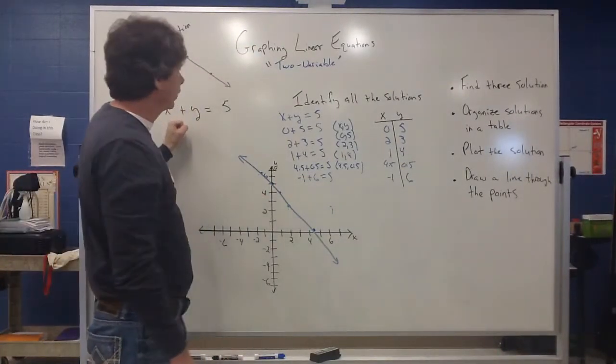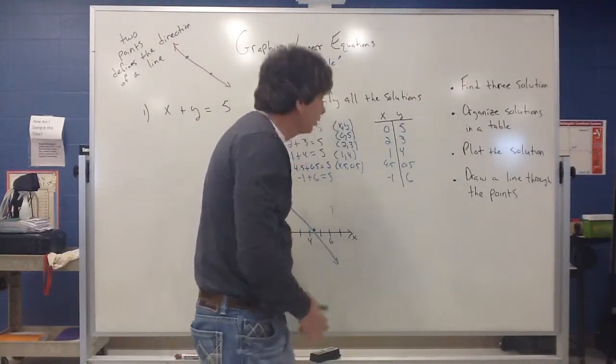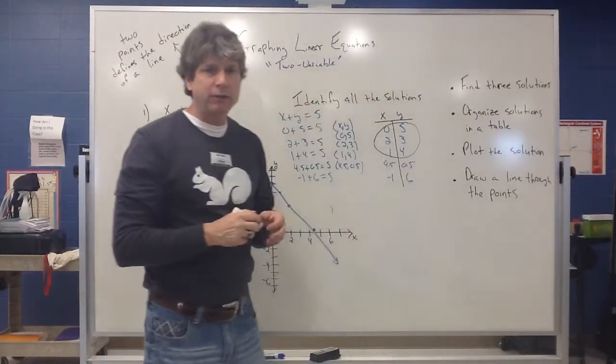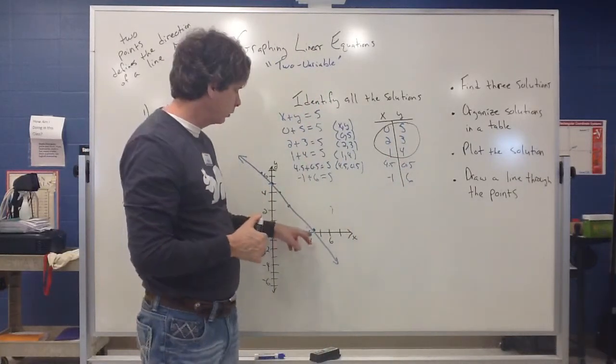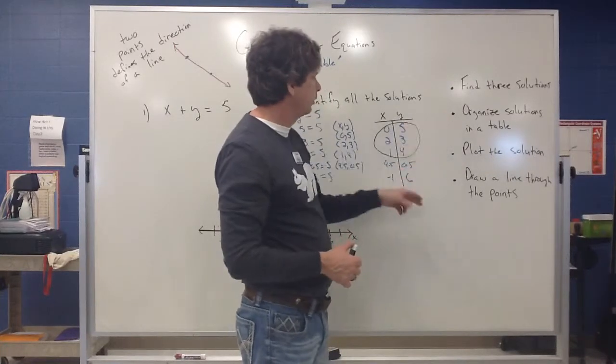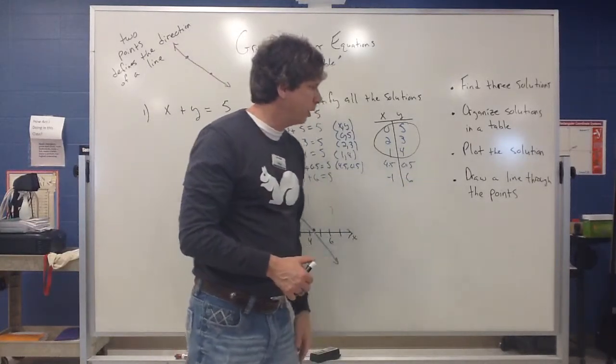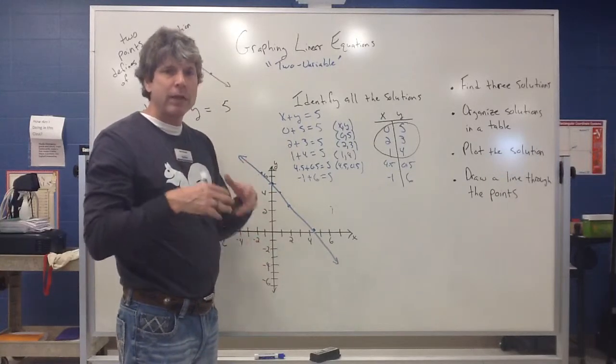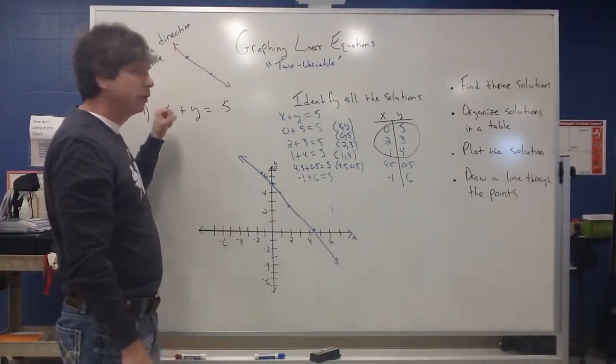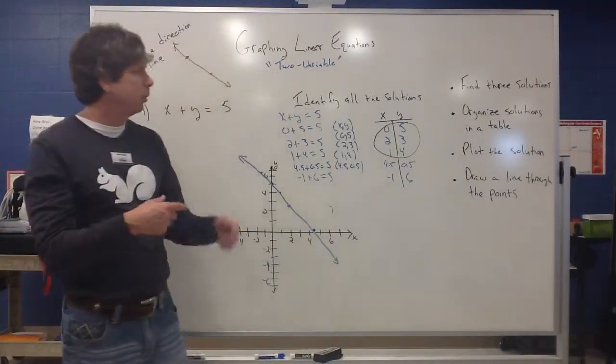So here's what we want to do when we have problems like this. I want to find three solutions. So like right here, I have these three solutions. Preferably you want nice clean whole numbers. Fractions and decimals are really hard to plot. I think that's what's getting me a little trouble here is some of these fractions and decimals. So I found three solutions. Also you want to organize these solutions in the form of a table, which we did. We want to plot those solutions on a graph. And then you want to draw a line through those points. And when you draw that line through those points, that represents all the solutions to this equation. Which means any point on that line is going to be something that makes this expression true. So that's some food for thought. Let's see if we can put another example together.